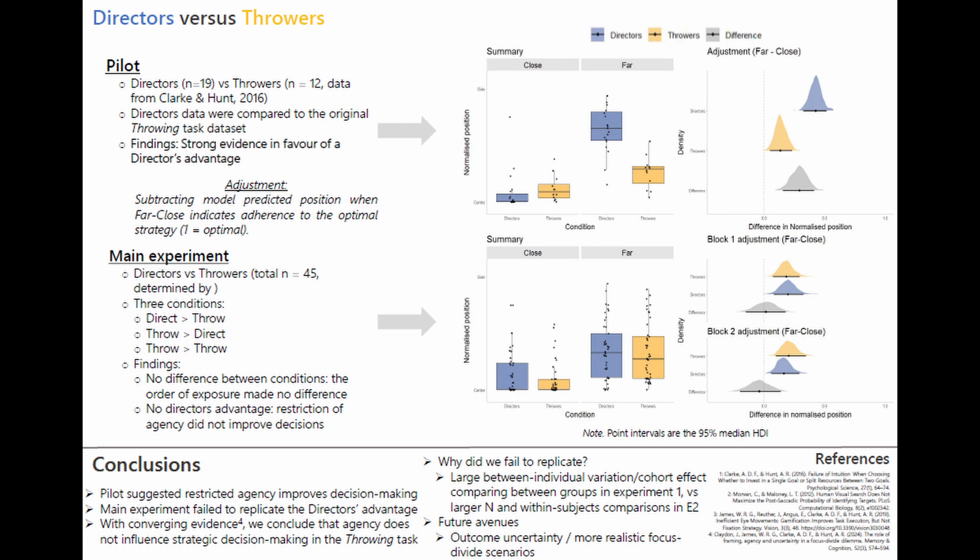The adjustment effect for block one, which is a direct replication of the pilot, is centred on zero, and the same for block two, which makes the same comparison but this time controlling for experience. We conclude that the restriction of agency does not influence strategic decision making in the focus divide dilemma. We attribute the large effect observed in the pilot to the small sample size and large inter-individual variation, versus the larger n and within-subjects comparisons used in experiment 2 that rule out an agency effect.